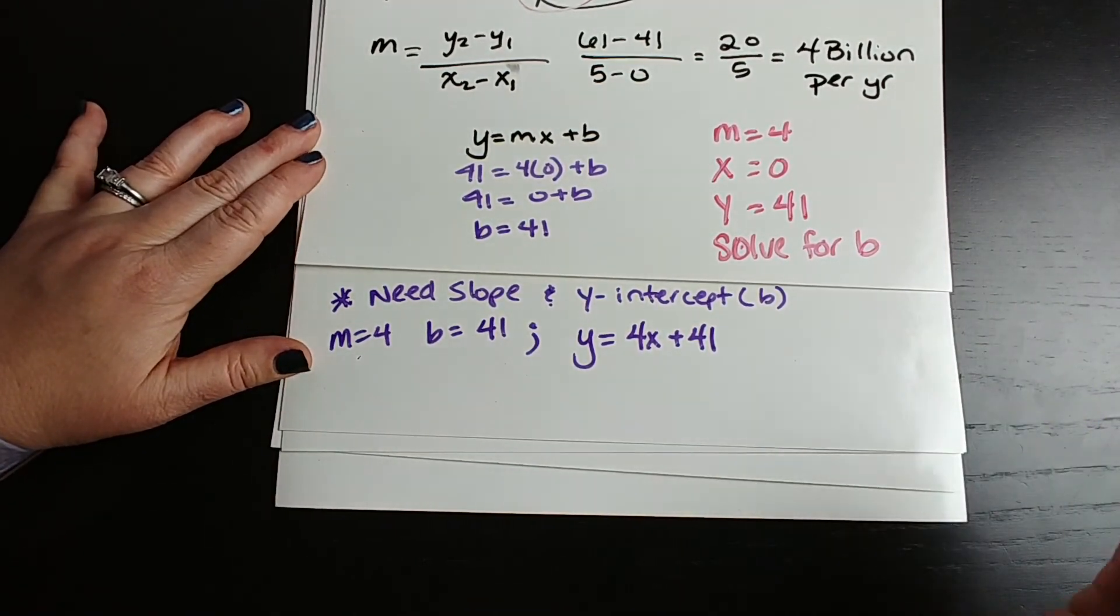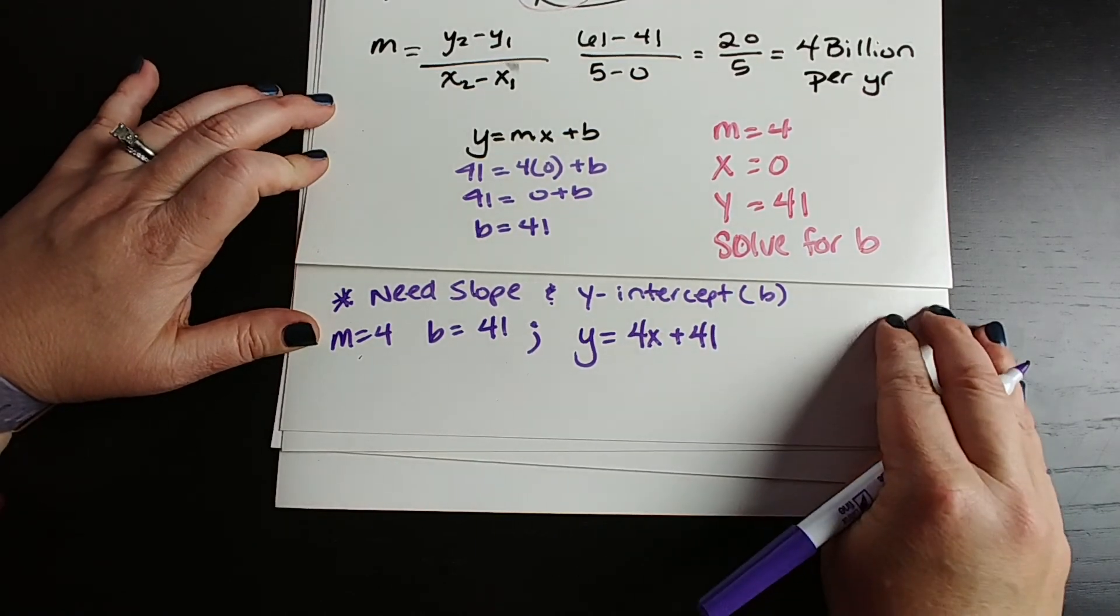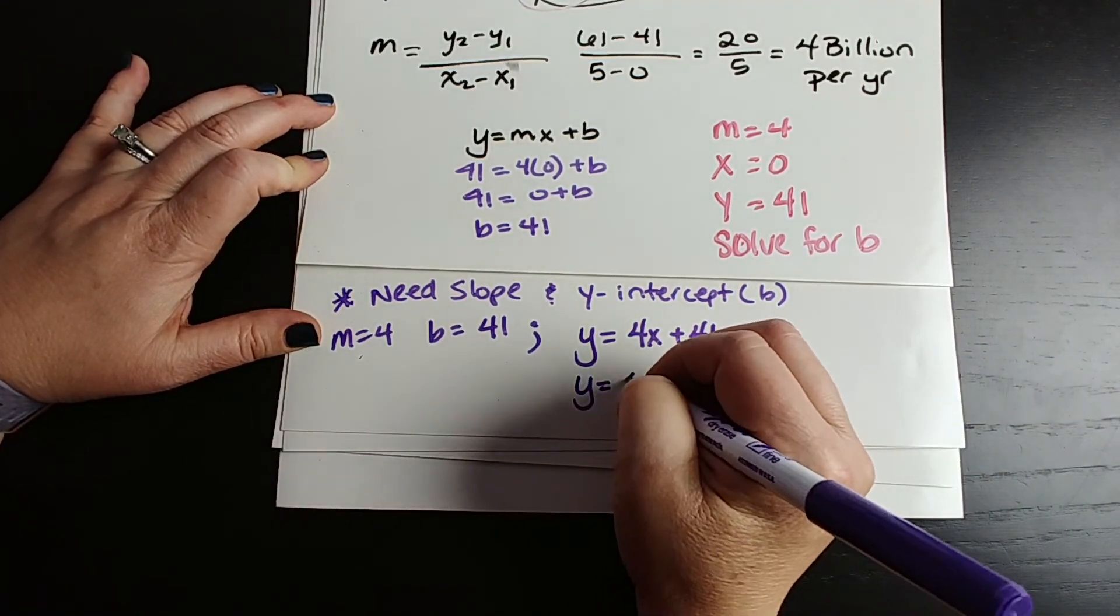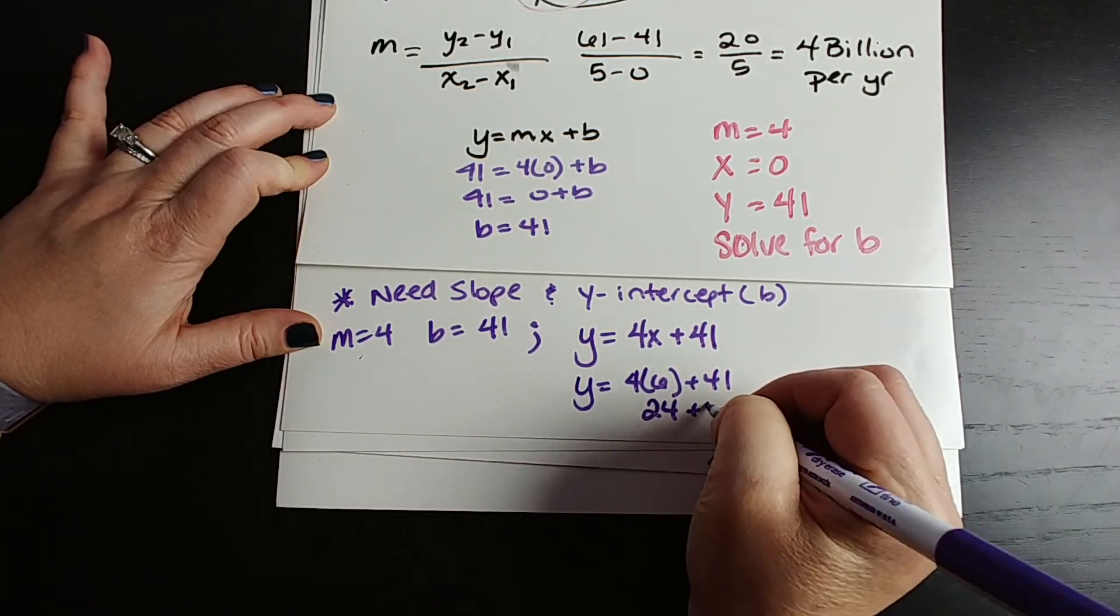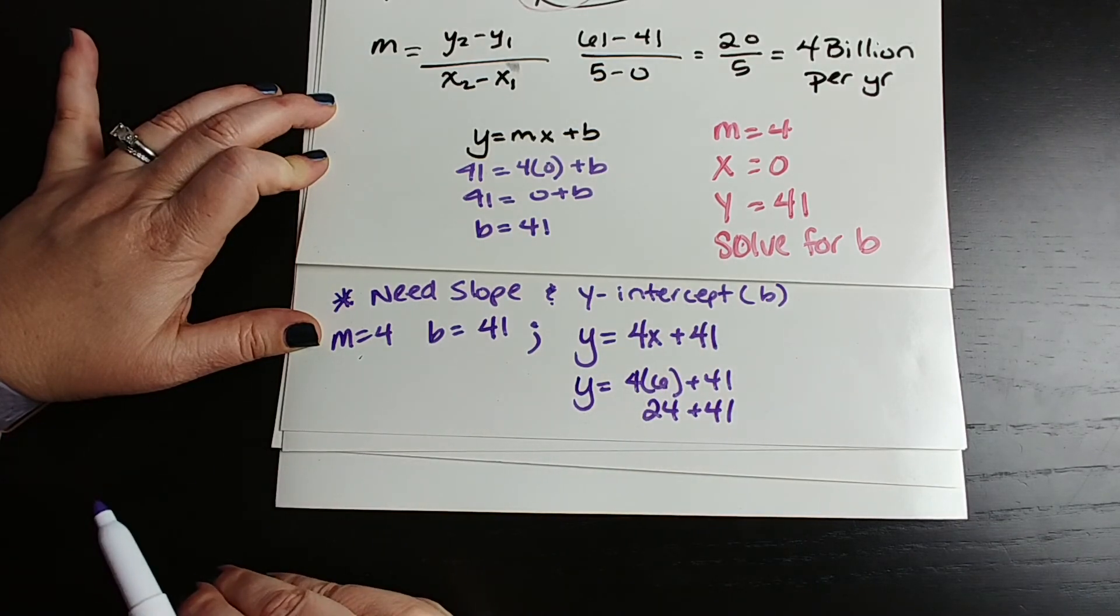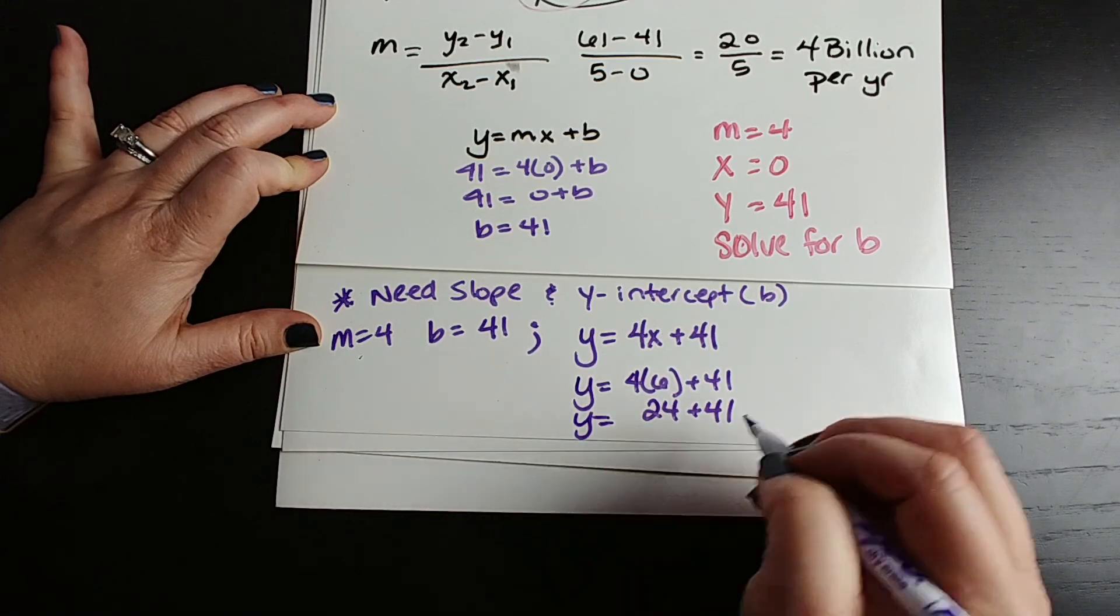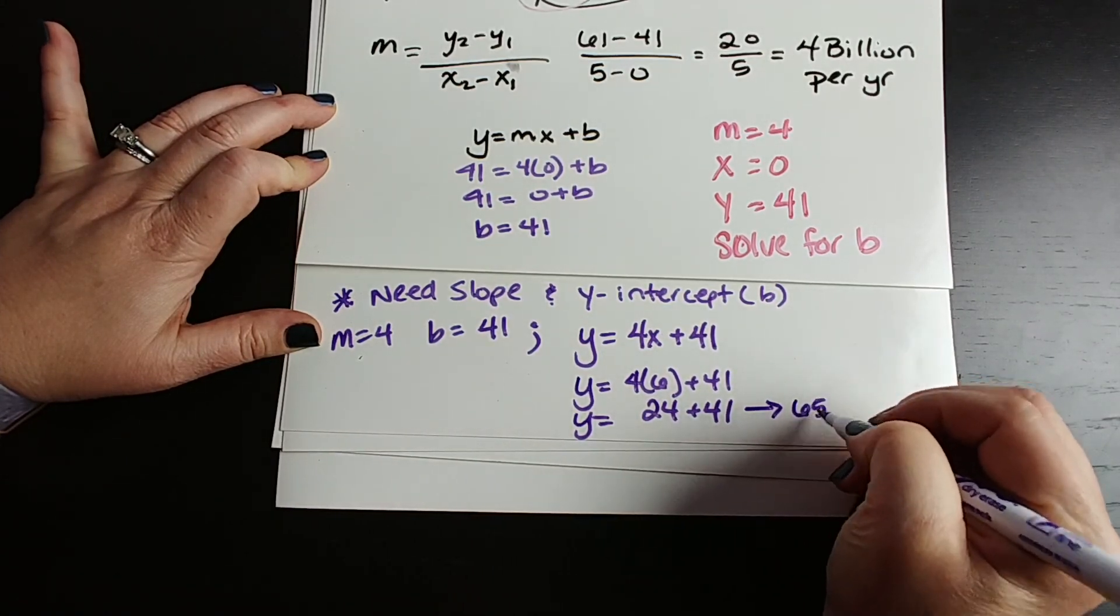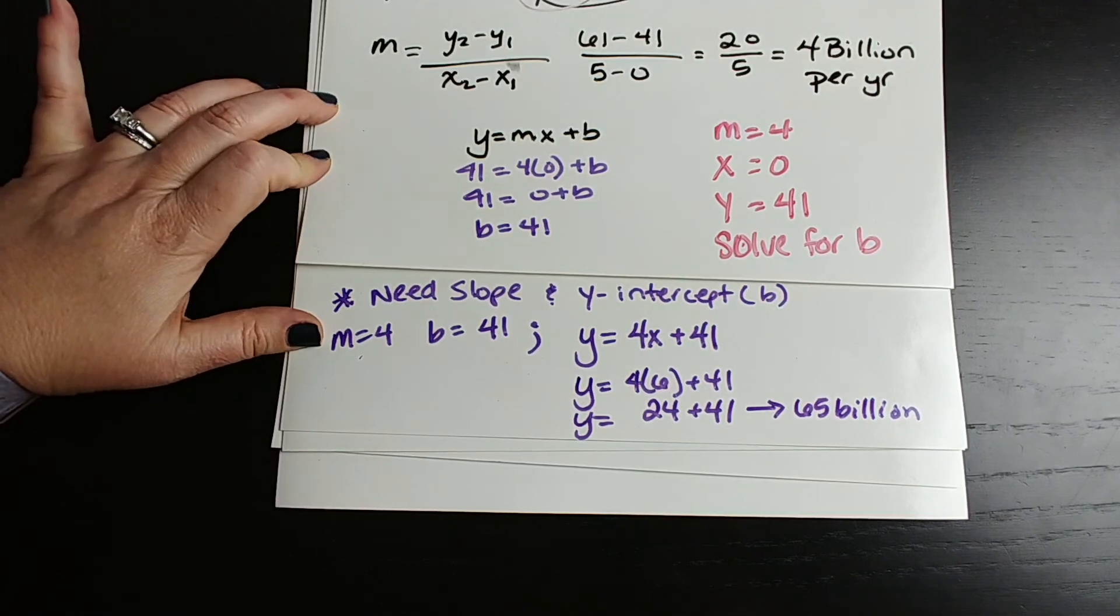And some of you probably have already done this, and you know the answer, and that's fine. We're just going to put it in and see that it's 65 billion. y equals 4 times 6 plus 41. So 24 plus 41, if you're wondering why I put in 6, remember the year 2000 is represented by x equals 6. So y equals 65 billion dollars in imports in the year 2000.